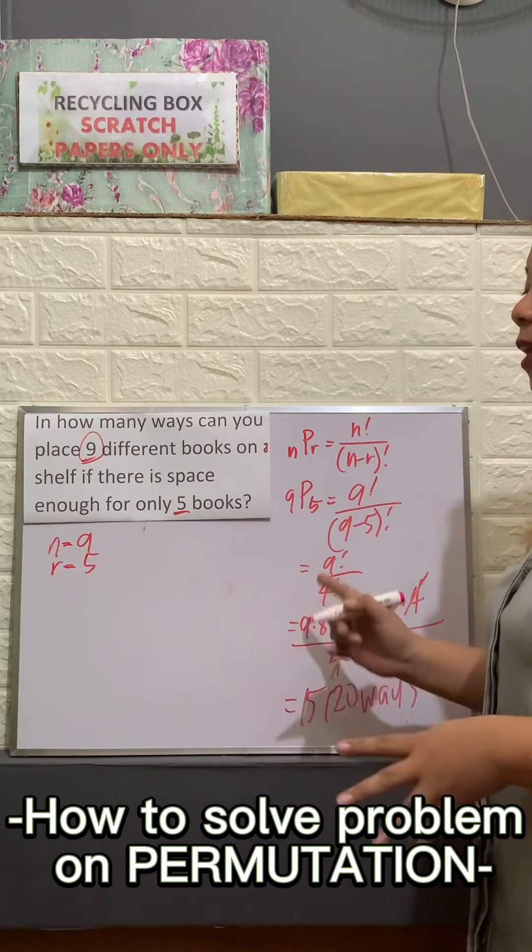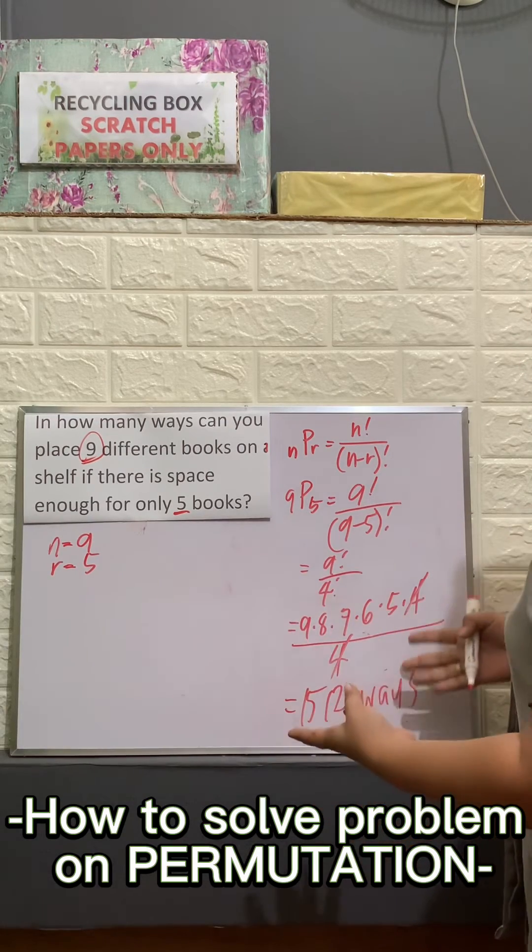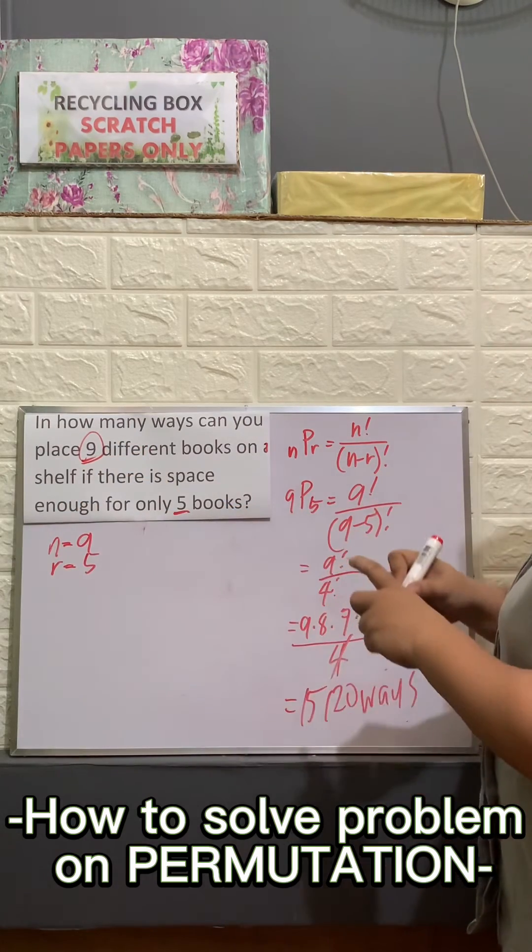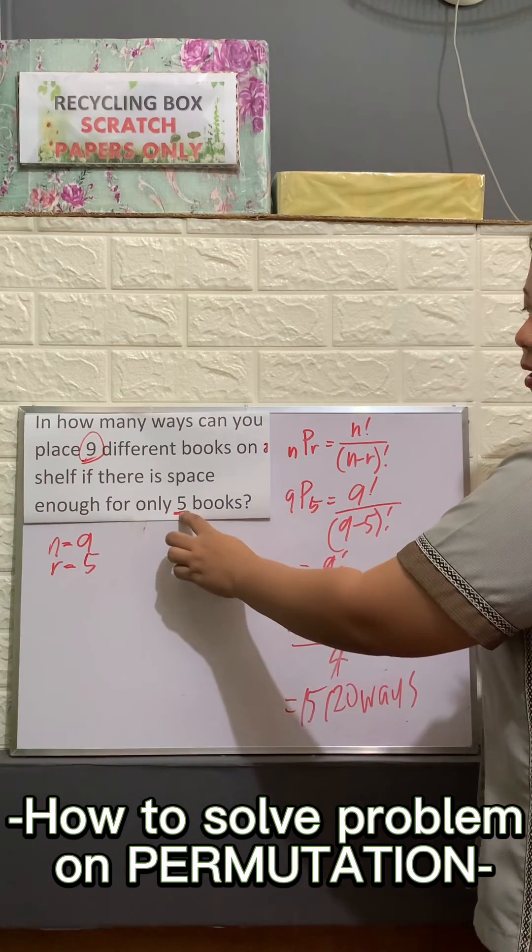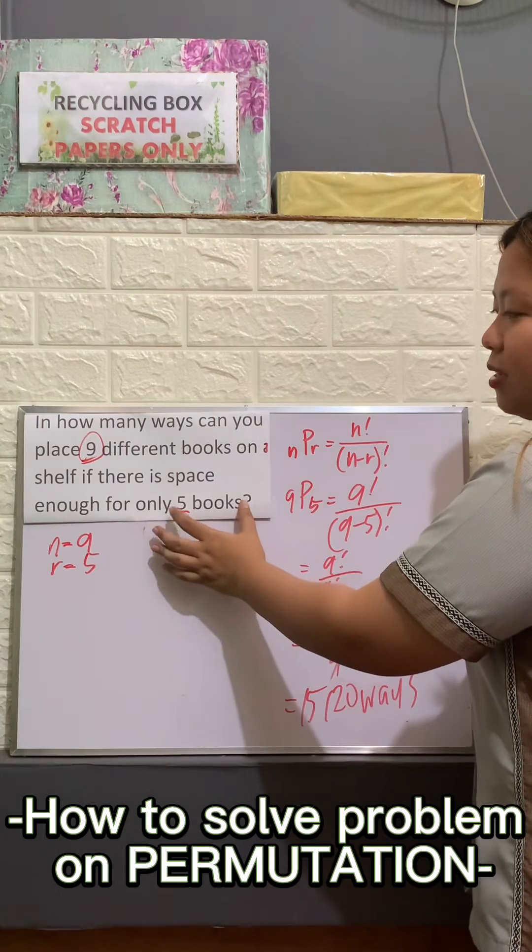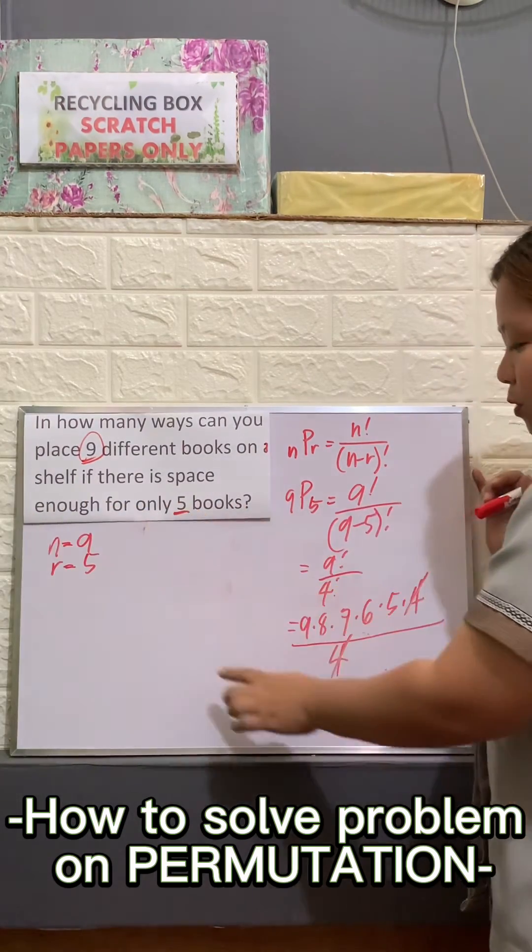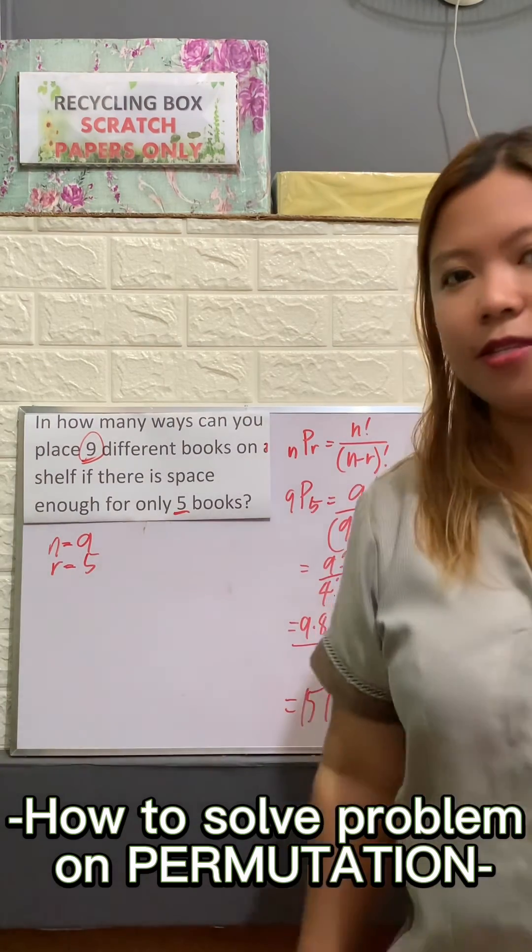There are 15,120 ways on how we can place these 9 different books in only 5 spaces, because the shelf has space enough only for 5 books.